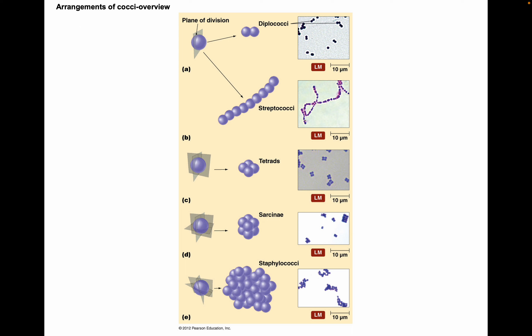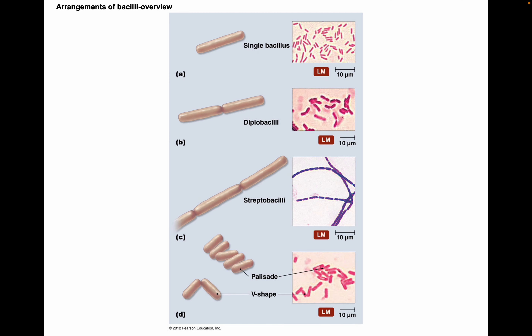The arrangements of these different shapes of cells also have names. A string of cocci would be streptococci, groups of four are tetrads, groups of eight are sarcinae, and large clusters are staphylococci. For bacilli, a single bacillus, doubles together are diplobacilli, a string are streptobacilli, and some are lined up side-by-side as palisades or in V-shapes.